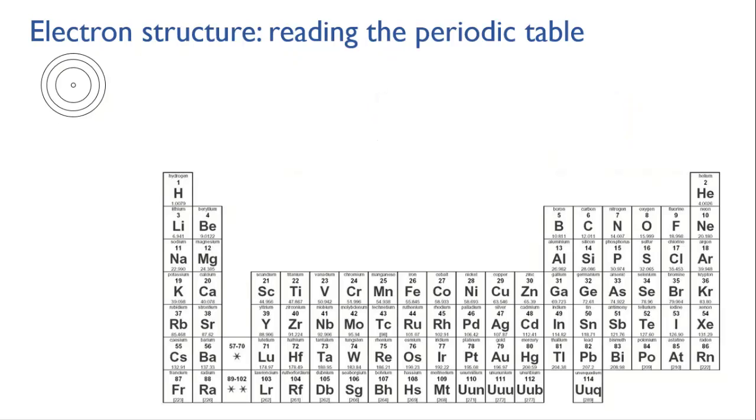But why not just have one long row of elements? Why make it into a table like this? And why are there only two elements in the first row, hydrogen and helium, and then eight in the second?